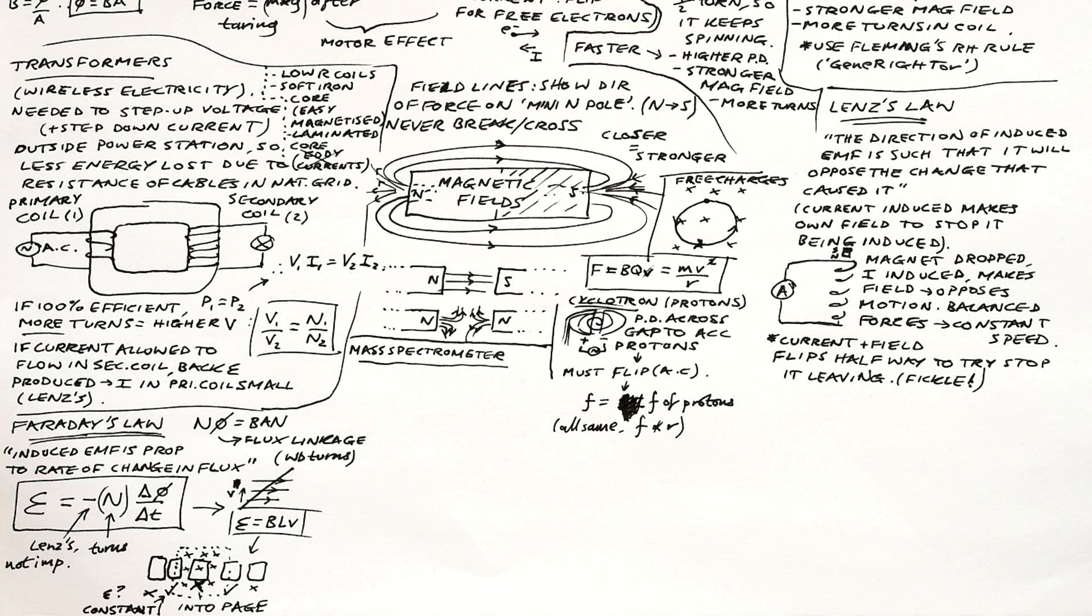Therefore, the frequency of the AC we apply to the D's is going to be the same as the frequency of the particles orbits. And yes, they all have the same frequency and same time period because it is independent to radius. If you don't know how to prove that, again, look at my magnetic fields lessons.